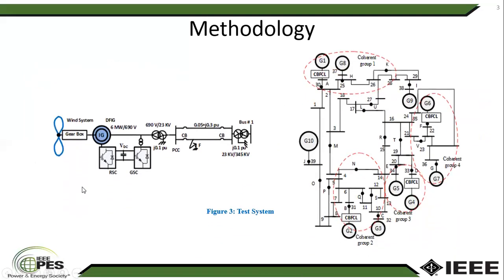To carry out the analysis, we considered an IEEE 39 bus system which is given here. This system has 10 generators and we divided the whole system into four specific coherent groups. For each group we considered a CBFCL. To make the analysis more realistic and dynamic, we integrated a six megawatt doubly fed induction generator based wind generator into bus number one of the system.